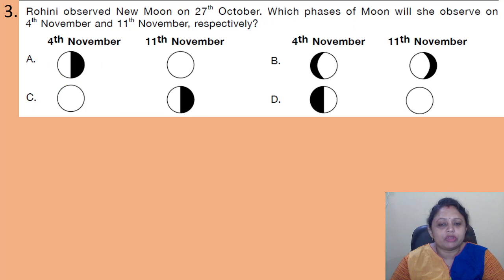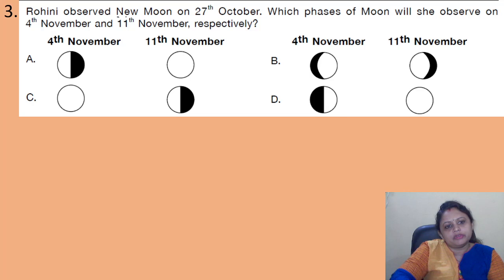Coming to the next question: Rohini observed a new moon on 27th October. Which phases of the moon will she observe on 4th November and 11th November respectively? Options A, B, C, D show different pictures of moon phases. We need to determine the moon phase at each date.